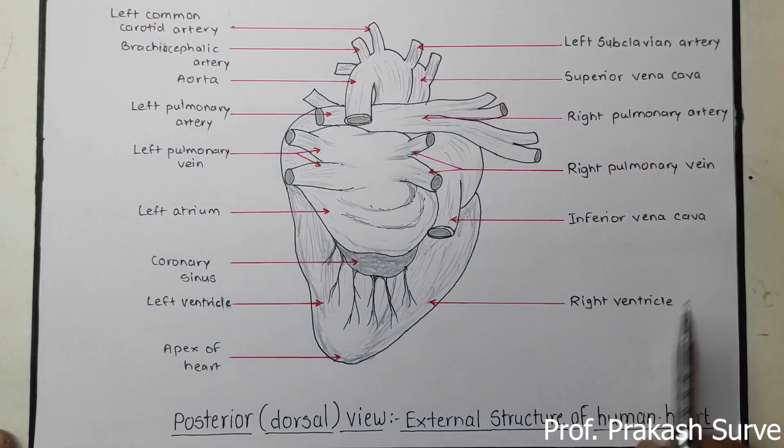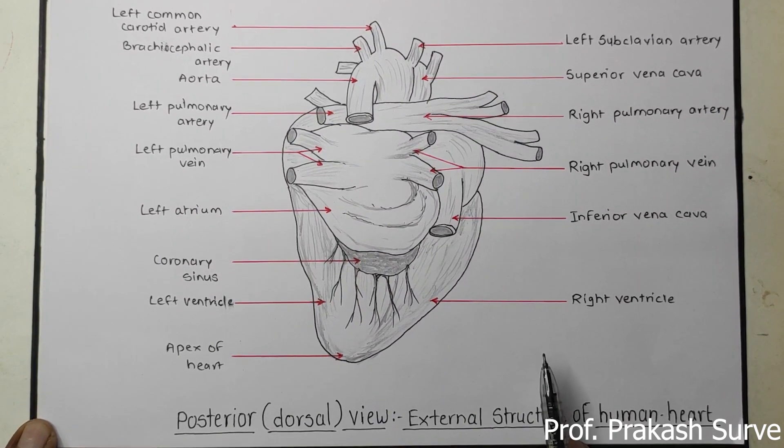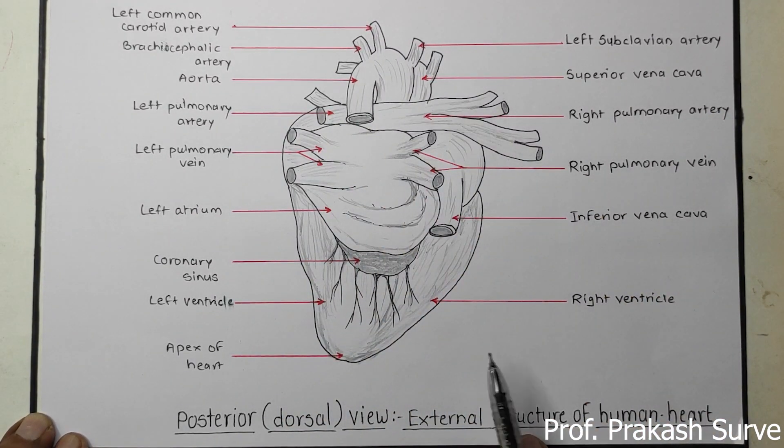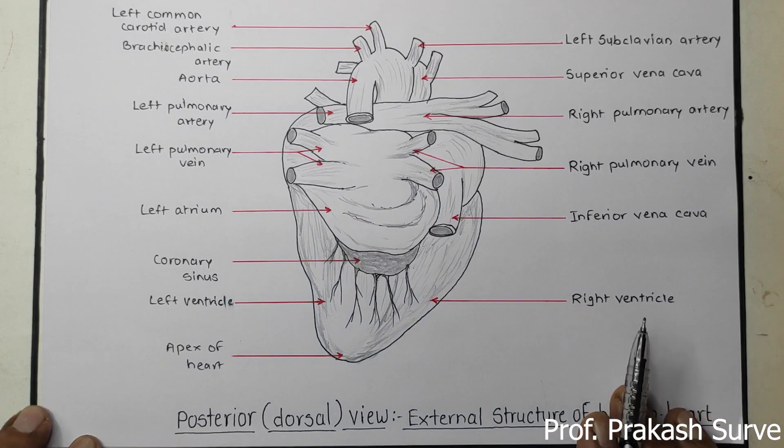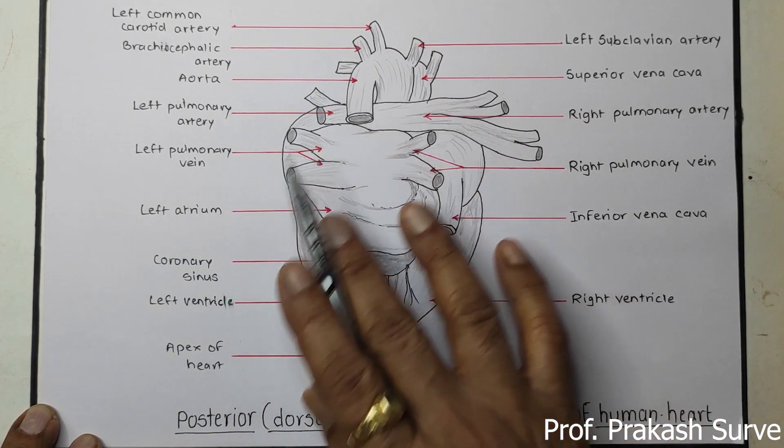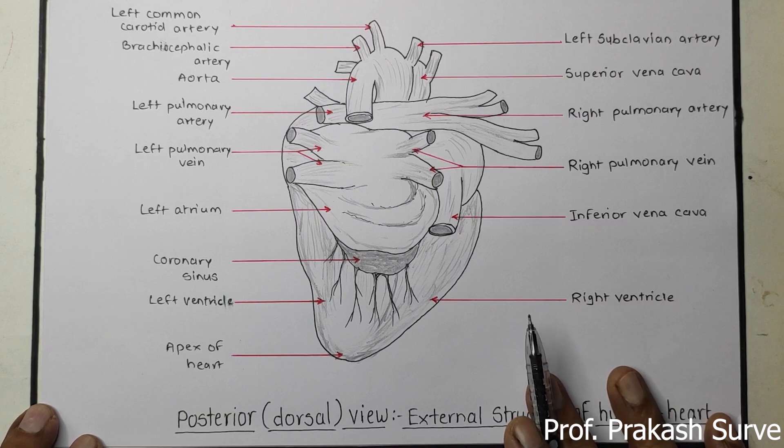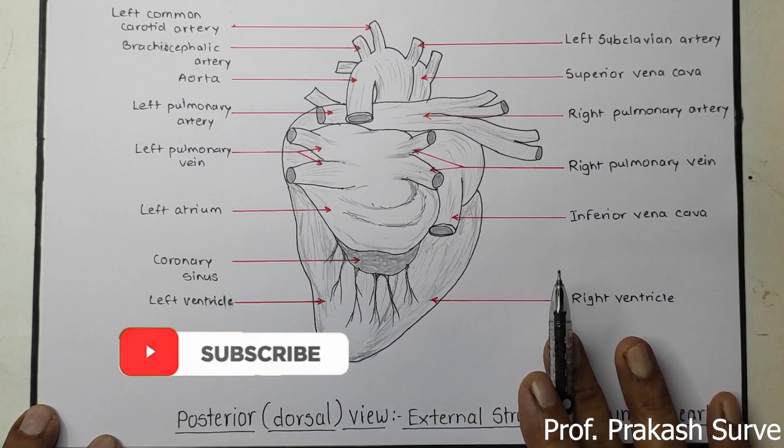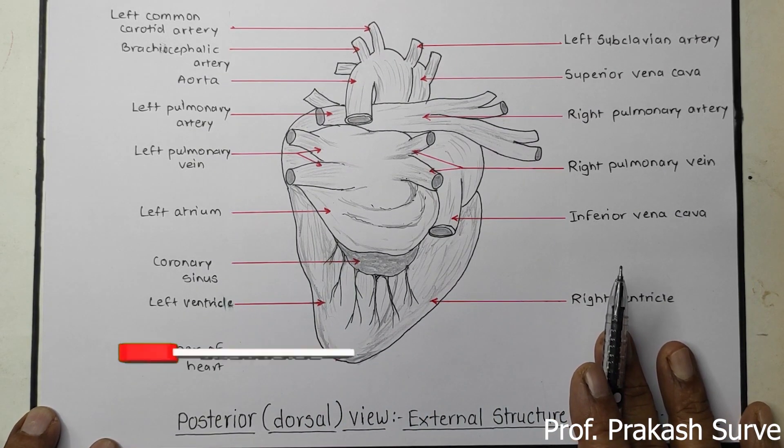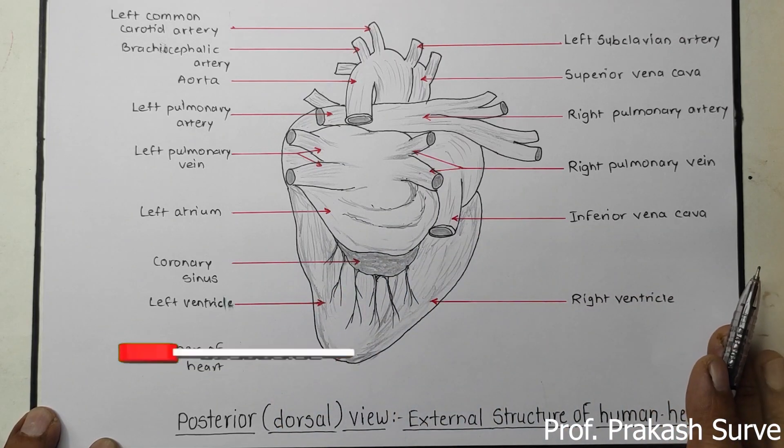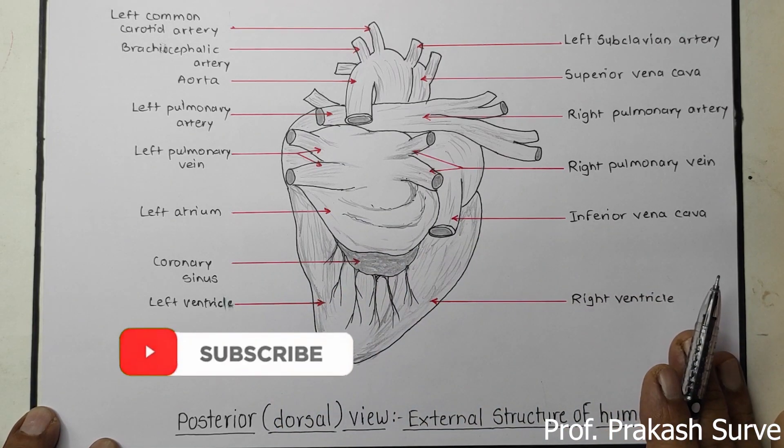So dear student, we have completed everything step by step with an easy method so everyone can draw this diagram of the dorsal view, that is the posterior view of the human heart. Label all the parts. This diagram will come for three marks. If you like my video, subscribe and share with your friends so that everyone can get the benefit. Thank you.